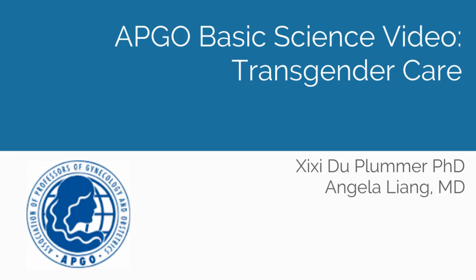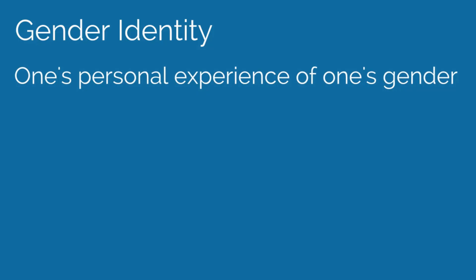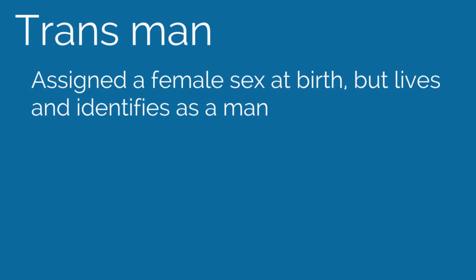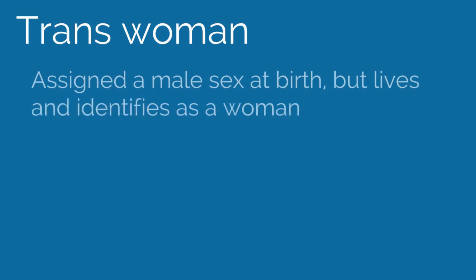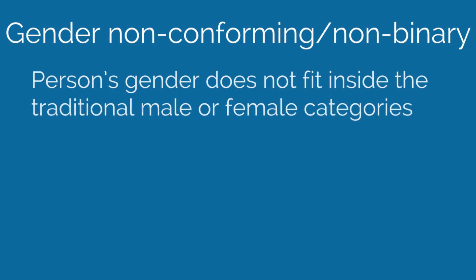Let's start by reviewing some definitions. Gender identity is defined as one's personal experience of one's gender and can differ from their natal sex. A trans man is assigned a female sex at birth but lives and identifies as a man. A trans woman is assigned a male sex at birth but lives and identifies as a woman. People can also be gender non-conforming or non-binary, when a person's gender doesn't fit inside the traditional male or female categories.